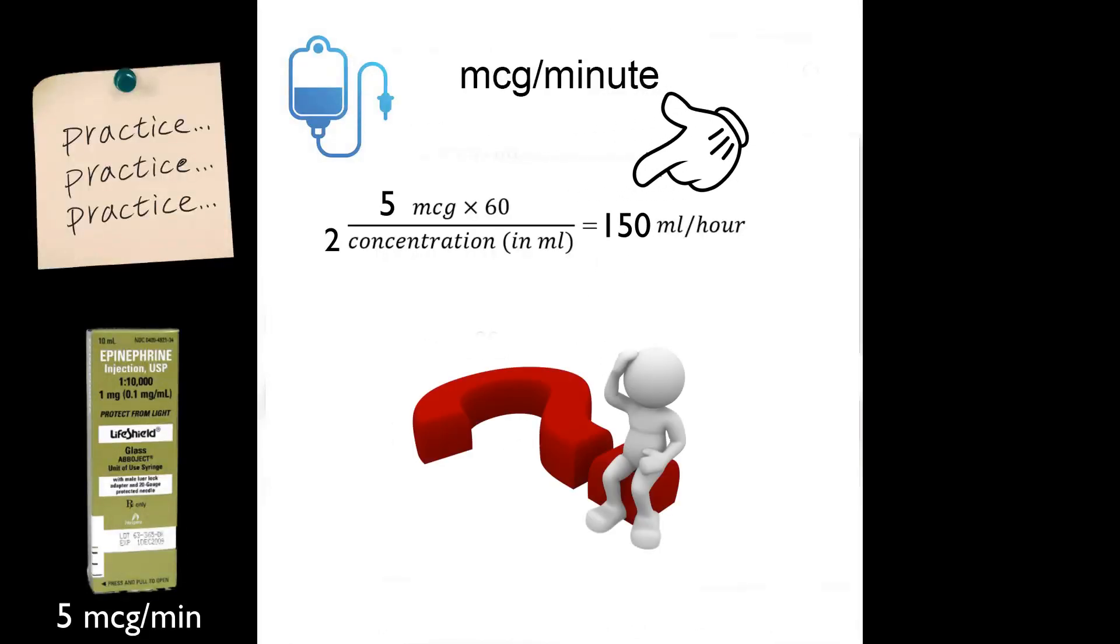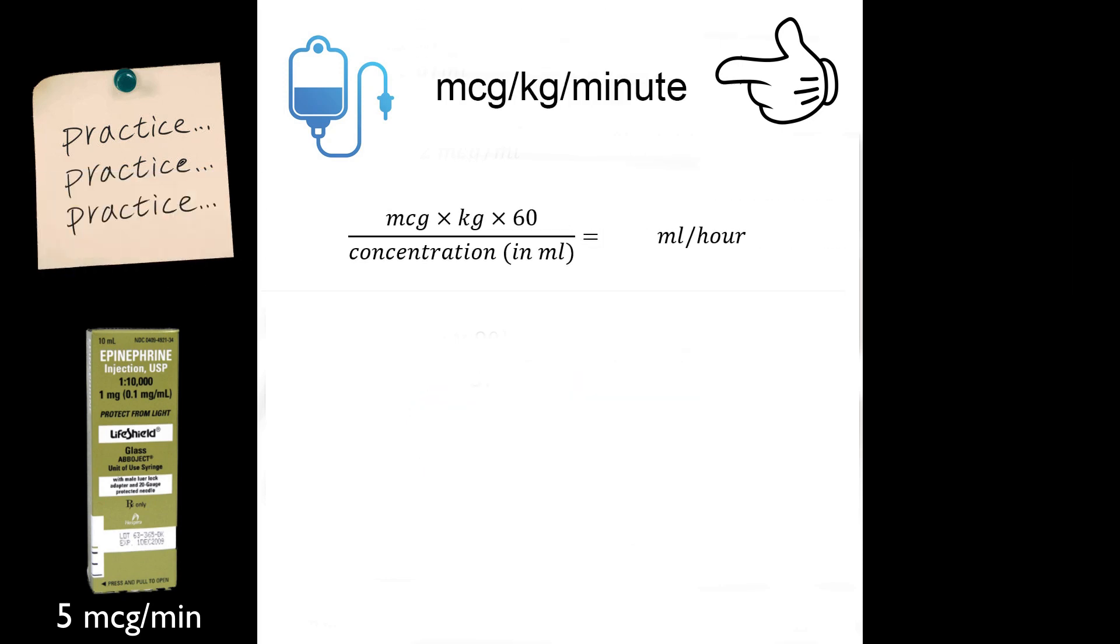How much more complicated is it then if we change to a weight-based dose? And instead of saying micrograms per minute, we switch to micrograms per kilogram per minute. Is it really that much more complicated? Calculating the concentration stays the same. We still have to multiply the minute-by-minute dose times 60 in order to get it to hours.